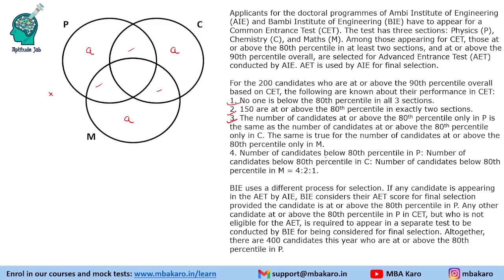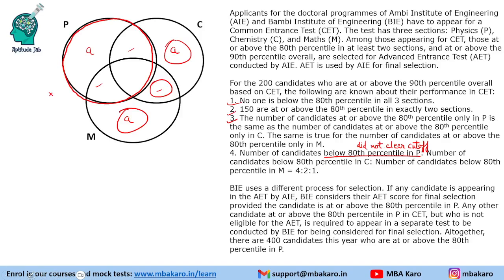Below 80th percentile in P means they did not clear the cutoff in P — we have to find the number of students who did not clear the cutoff in P, which includes three specific region values. Similarly, below 80th percentile in C means those people who did not clear the cutoff in C. The same goes for M also.